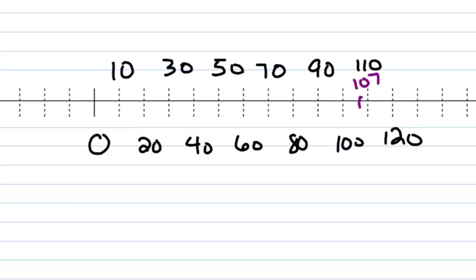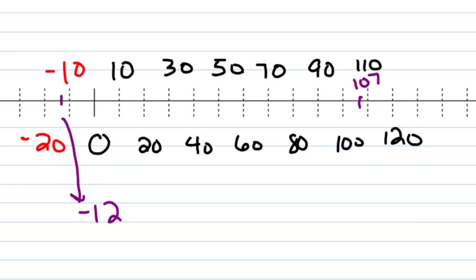Going to the left of zero, you'd have negative 10, then negative 20, and so on. We don't need to go very far because we need negative 12, and that's going to be about right here — negative 12. Now, if I look at this number line and say, what's the difference between negative 12 and 107 on the number line?